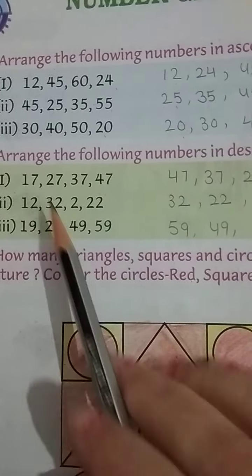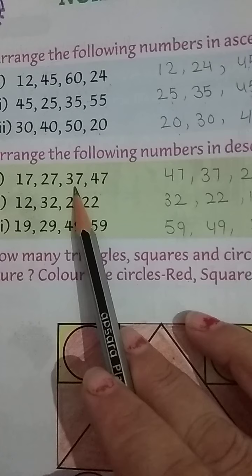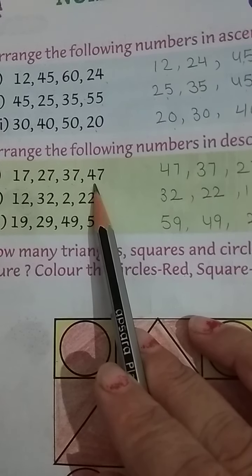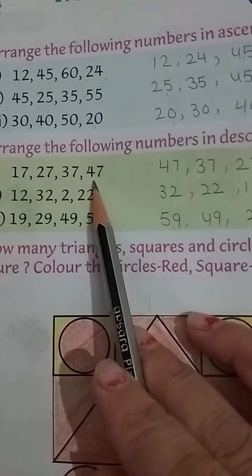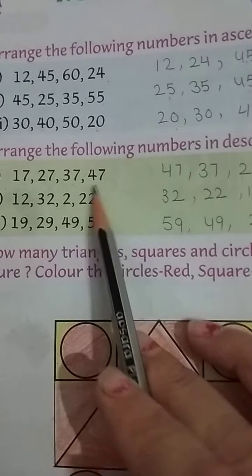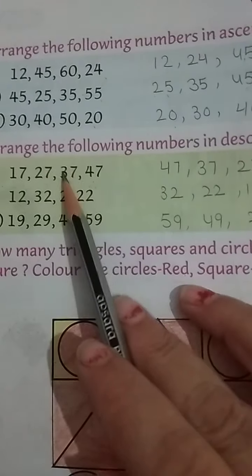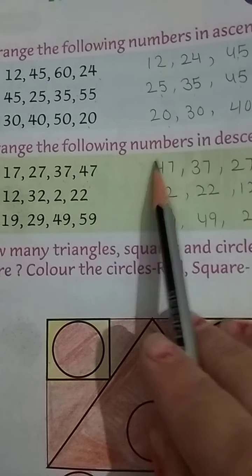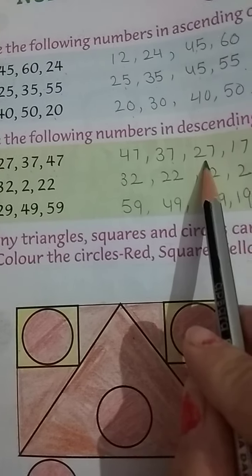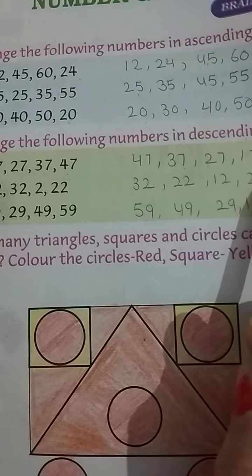Toh yeh haan pe dehkho first. 17, 27, 37, 47. Yeh descending order me nahi hai. Yeh ascending order me. Isko humnye descending order me change karna hai. Toh first aajaga 47, 37, 27 and 17.